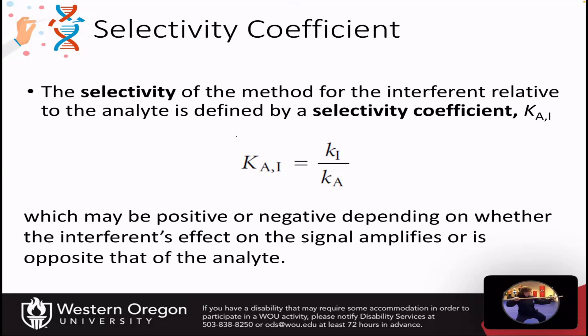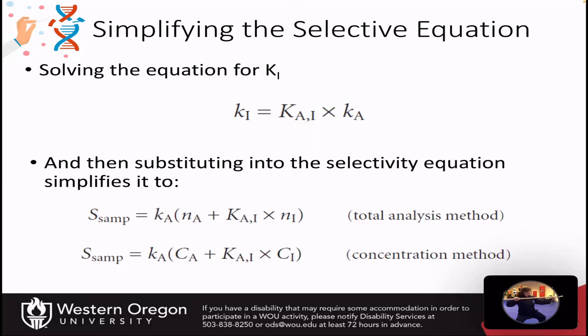The selectivity of a method for the interference relative to the analyte is defined as the selectivity coefficient, termed K_AI. It is simply the sensitivity of the interference K_I divided by the sensitivity of the analyte K_A — these are our proportionality constants. The selectivity coefficient can be positive or negative, depending on whether the interference amplifies the signal or works opposite to the analyte and diminishes it.